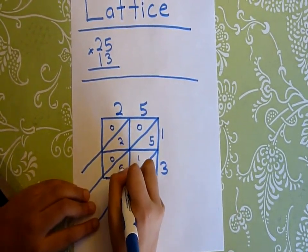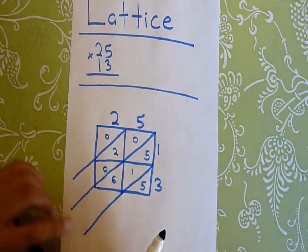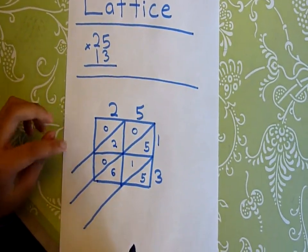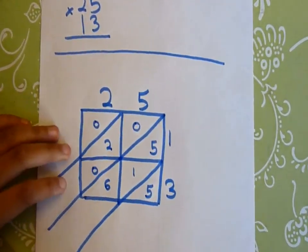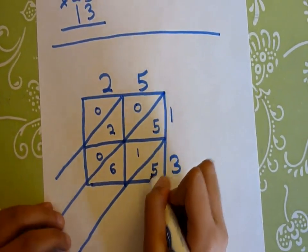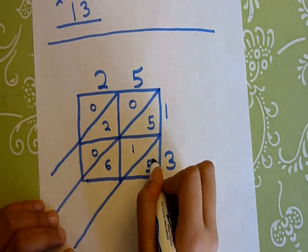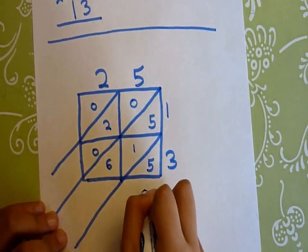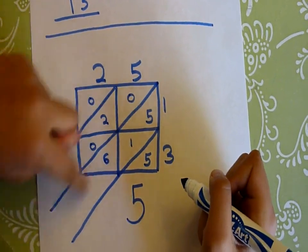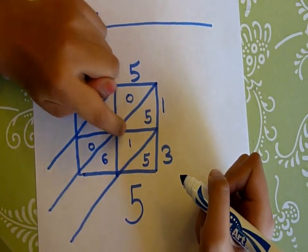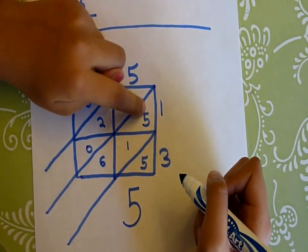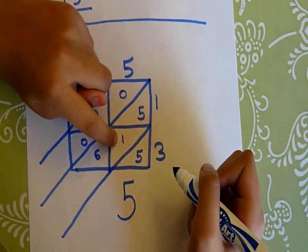Now we're done doing the multiplication part, now we have to do addition. So first we have to add diagonally. First we add five, there's no other number here, so we just do five. Next we come here, there's five, one, and six. So first we do five plus one, that's six, and six plus six is twelve.